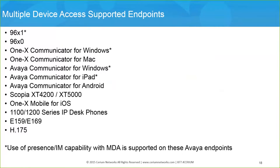These are all the endpoints currently supporting MDA for telephony. Devices supporting presence and instant messaging are also noted. In regards to presence, watchers of the MDA user will receive the aggregated presence state from Avaya Presence Services. In regards to instant messaging, an MDA user may have one IM-capable device active in the MDA device group. Users cannot have more than one IM-capable device registered at the same time. To move IM from one device to another, the user must first log out IM on the current device before logging into IM on another device.